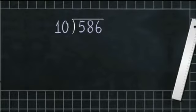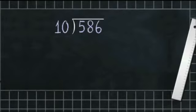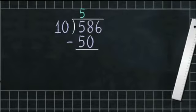Now, 10 multiplied by 2 is 20, 10 multiplied by 3 is 30, 10 multiplied by 4 is 40, and 10 multiplied by 5 is 50. So 58 will be divided 5 times by 10, that is 10 × 5 = 50. Now we subtract 50 from 58: 8 minus 0 is 8, and 5 minus 5 is 0.